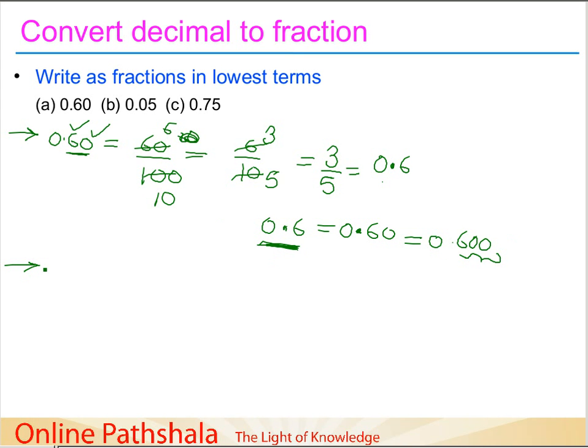Let's try and see the next problem: 0.05. I am representing this as 1 tenth and 1 hundredth place. I have to represent this as 05 divided by 100, which is 5 divided by 100. 5 divides into 5 twenty-five times.